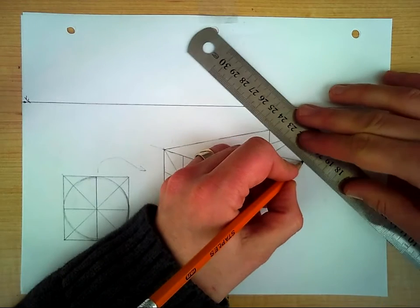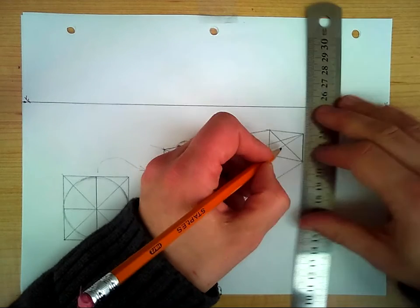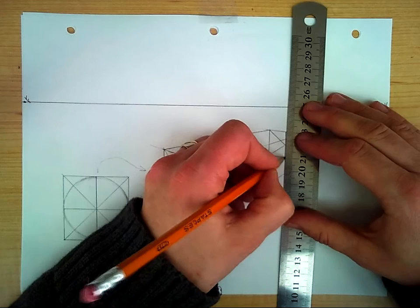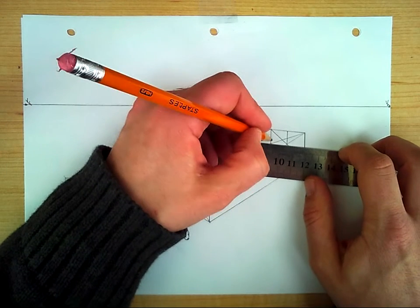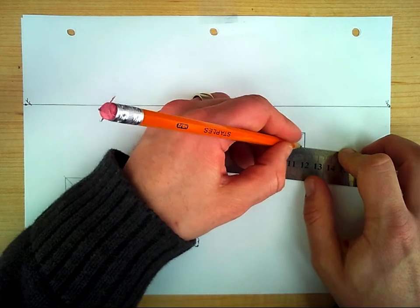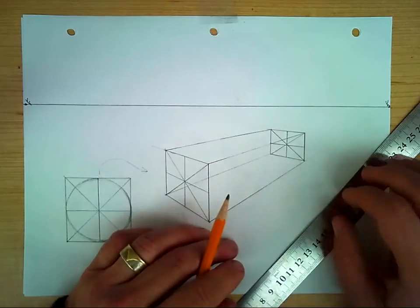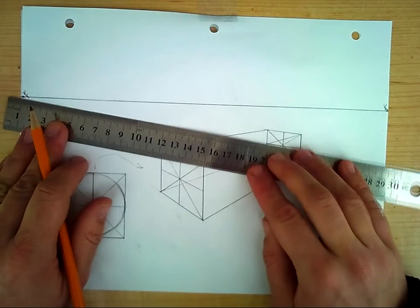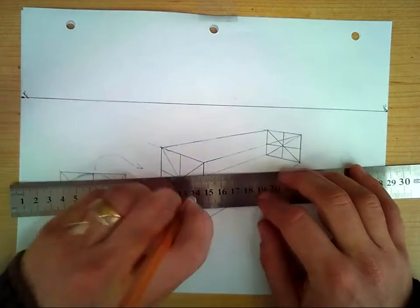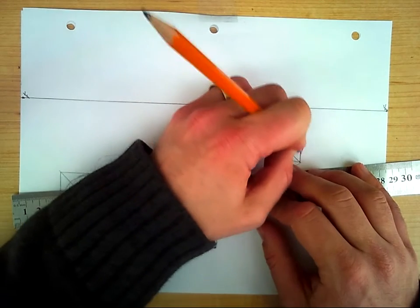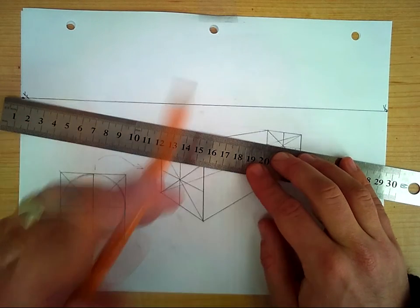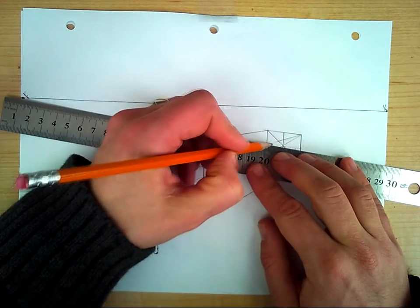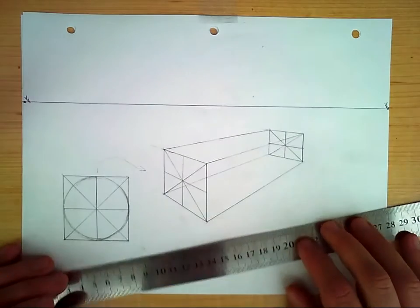We're going to do the same thing with the back face of the box. Draw an X and draw a star pattern by cutting the box face in half vertically and horizontally going to the vanishing point.